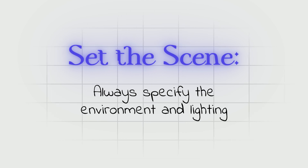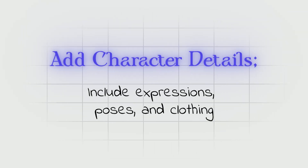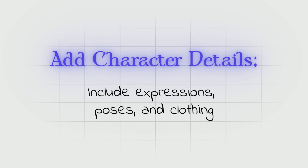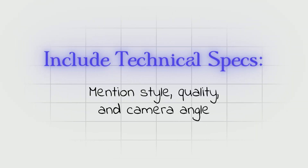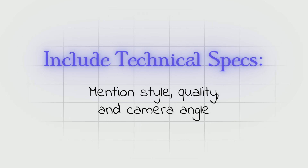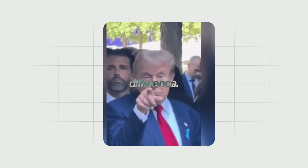Set the scene — always specify the environment and lighting. Add character details — include expressions, poses, and clothing. Include technical specs — mention style, quality, and camera angle. Layer in atmosphere — add mood-setting elements. Let me show you the difference.